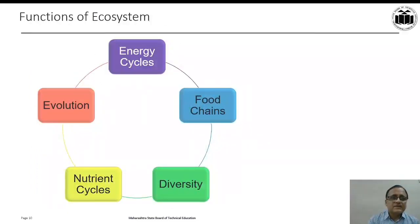Having seen the aspects of the ecosystem, now we will go for studying the functions of ecosystem. This diagram enumerates the different functions of ecosystem as energy cycles, food chains, diversity, nutrient cycles, and evolution. Now we can have a detailed discussion over these functions.